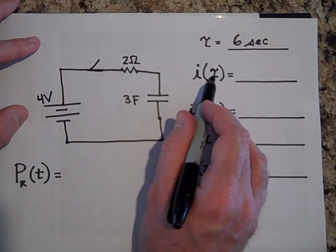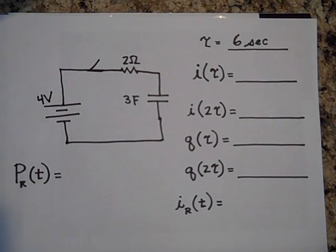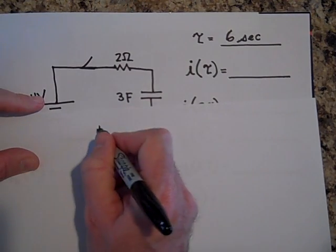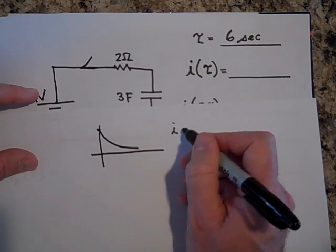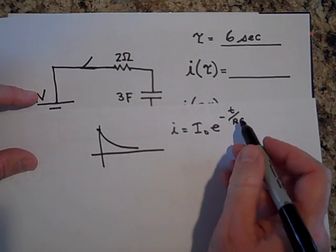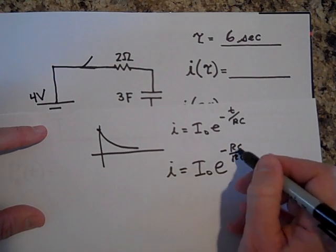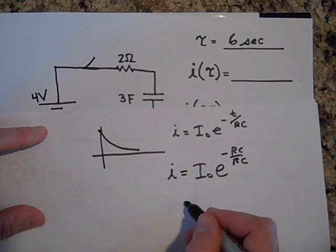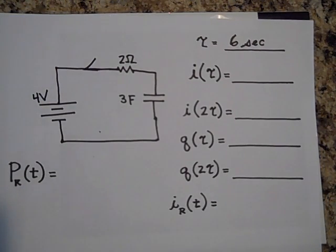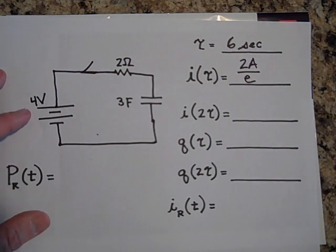Hey, what will be the current one time constant after you close the switch? So one time constant after you close the switch, what will be the current? Okay. Well, let's figure this out. The current is, the current's going to start out high and go low. It's going to drop like that. And so the current is given by this equation, I naught e^(-T/RC). So let's put in RC for T. That's one time constant afterwards. This goes to e^(-1). So it will be I naught over e because e^(-1) is like one over e. And so what did we say? The initial current was two amps. So it's going to be two amps over e. That's what it is. Two amps over e.